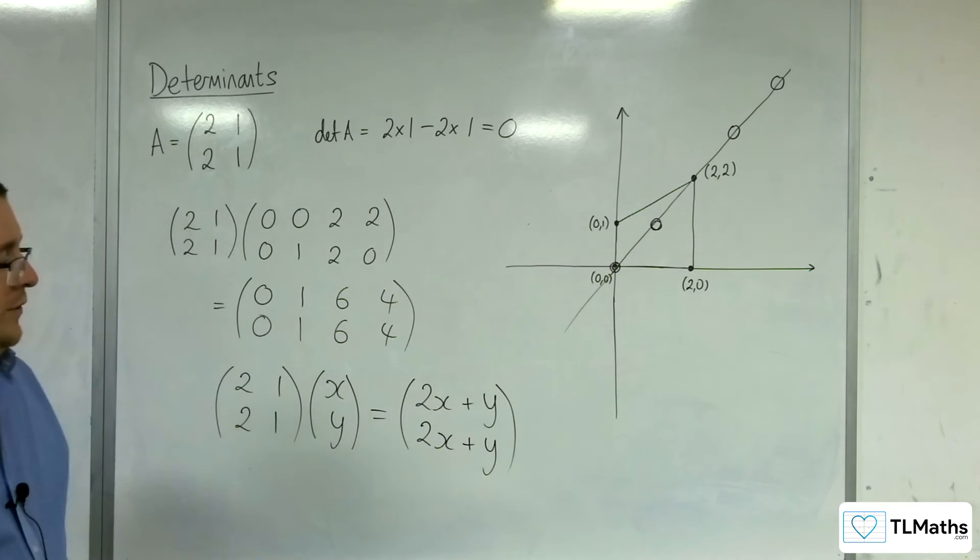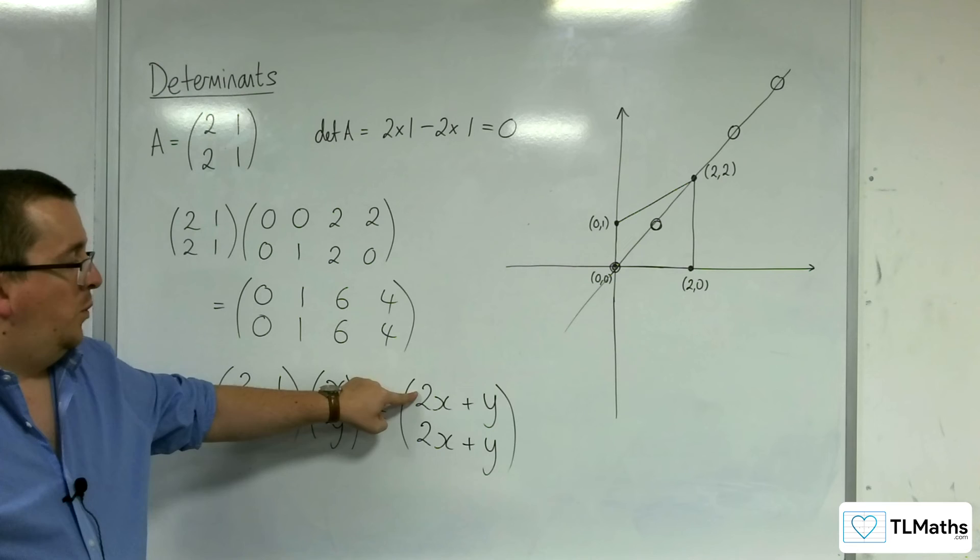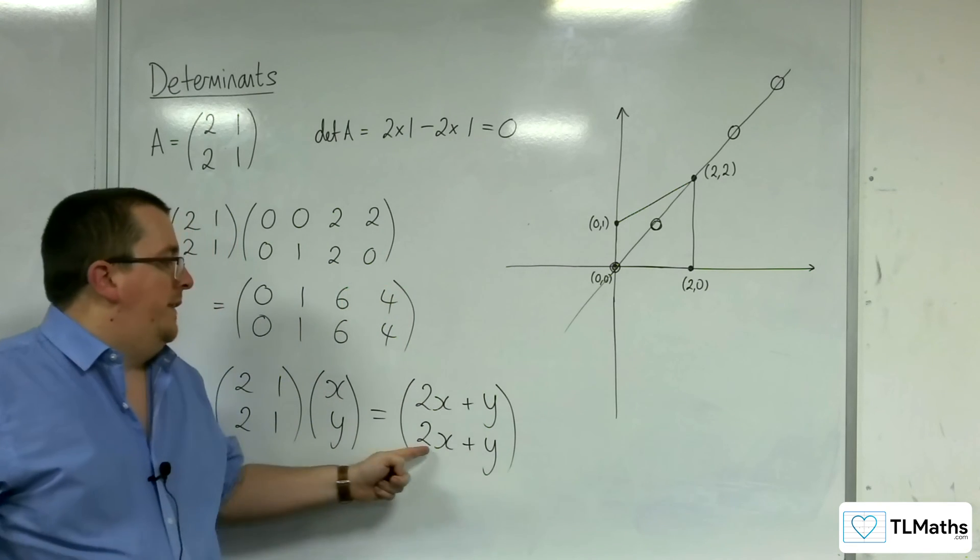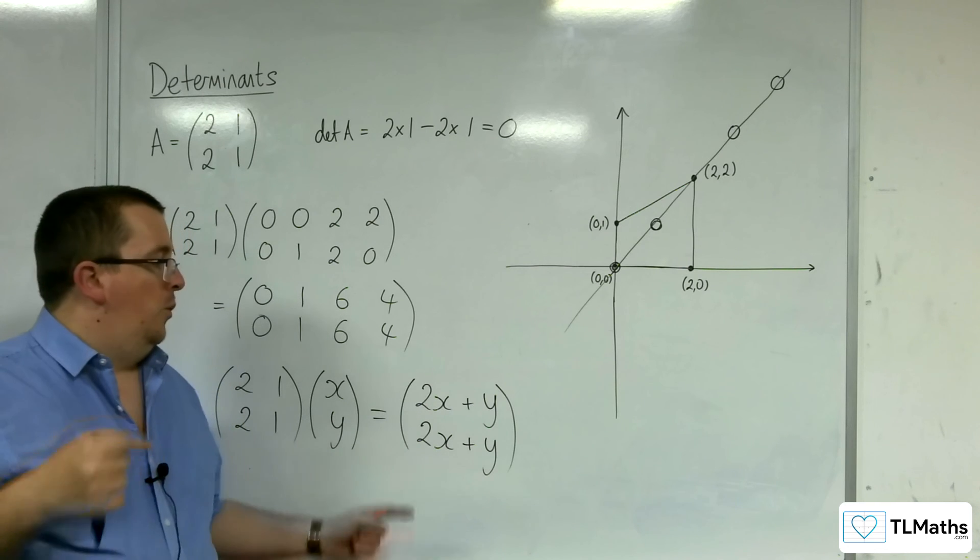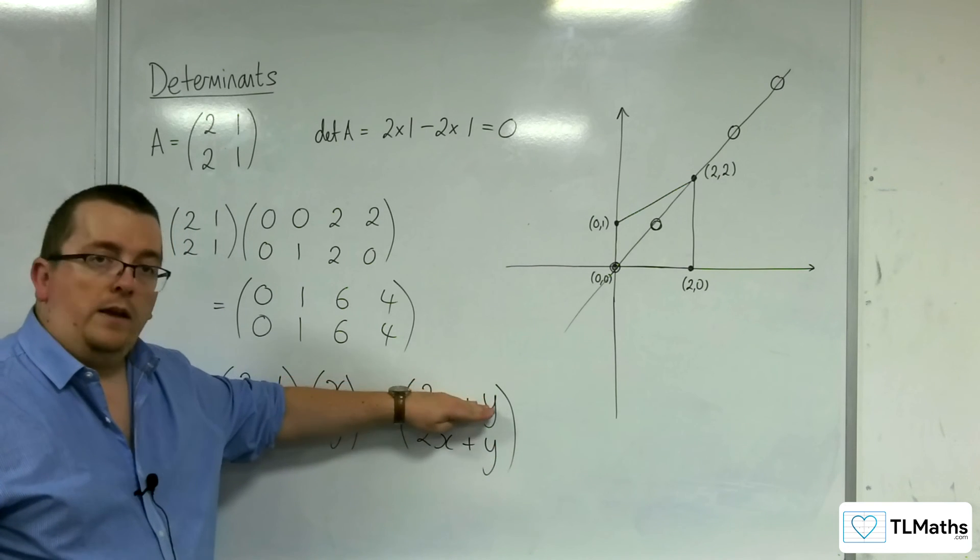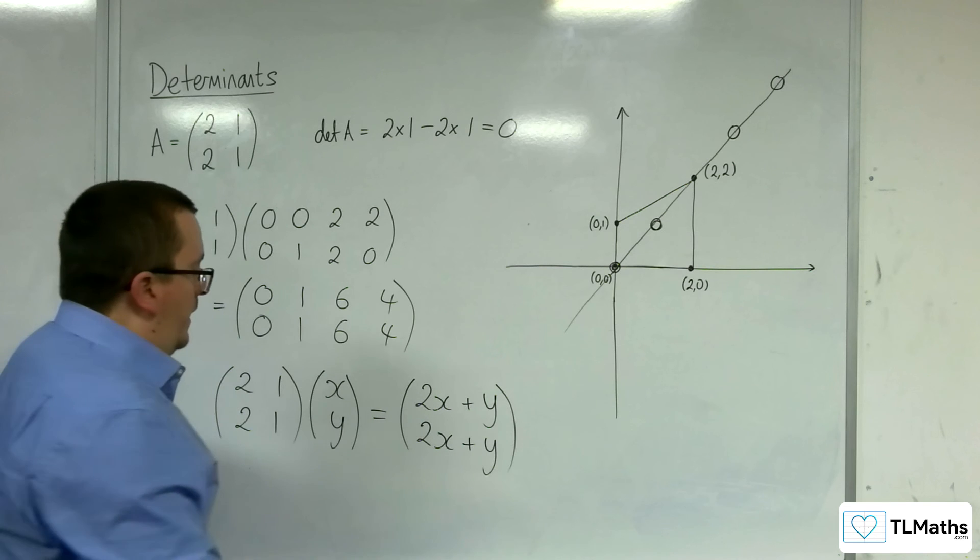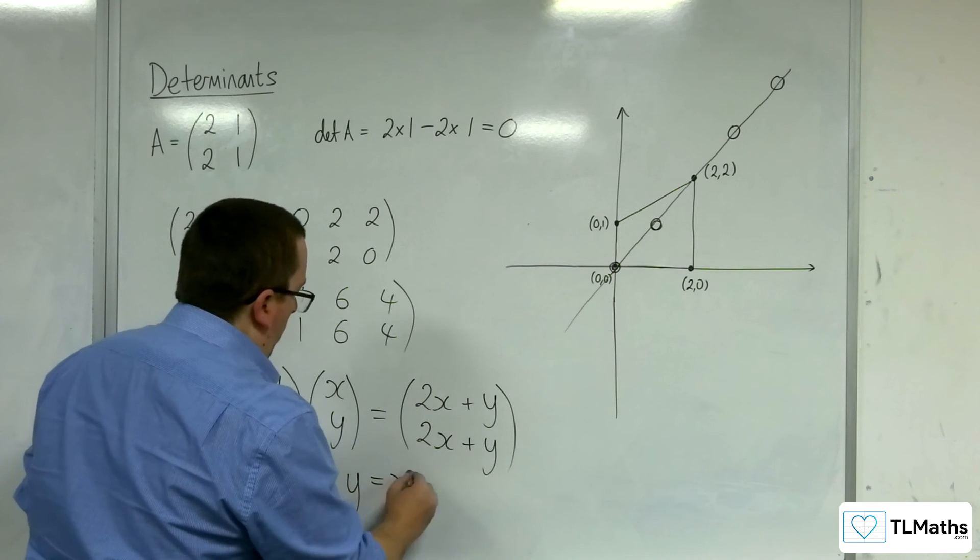And so you can see that the X coordinate here, the new X coordinate and the new Y coordinate are both the same. And so Y's are equaling the X's. And so that's why it's on the line Y equals X.